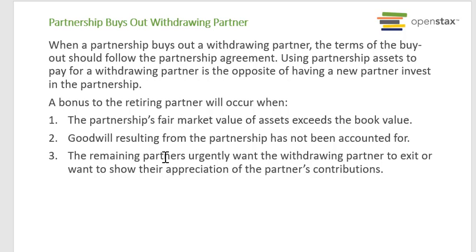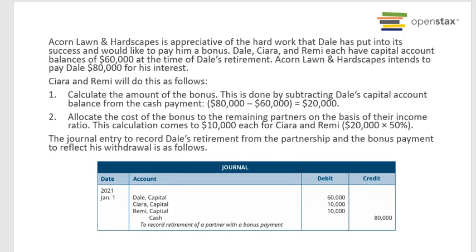When the partnership buys out a withdrawing partner, the terms should follow the partnership agreement. Using the partnership's assets to pay a withdrawing partner is the opposite of having a new partner invest. A bonus to the retiring partner occurs when the partnership's fair market value of assets exceeds book value, when goodwill has not been accounted for, or when the remaining partners want to show appreciation for the retiring partner's contributions. In this case, Acorn Lawn and Hardscapes wants to pay Dale a bonus for his hard work and contributions to its success.